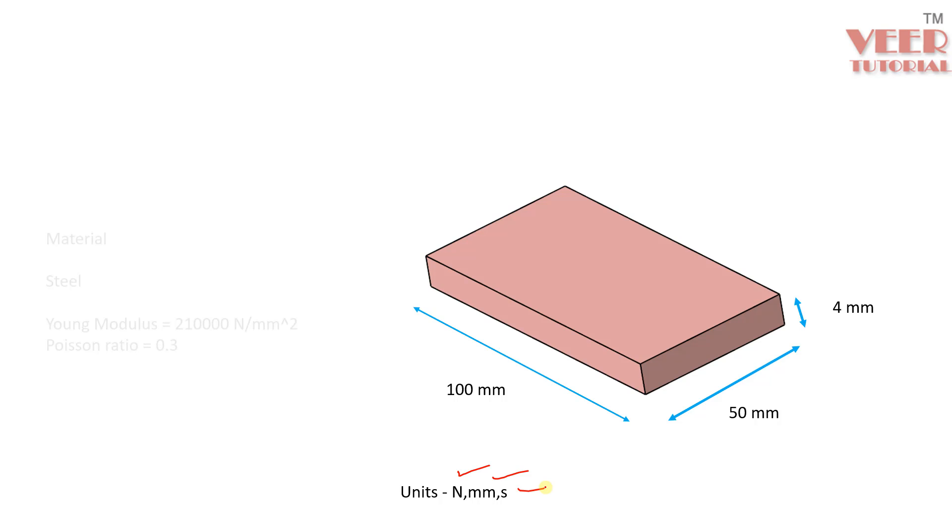Now let's consider the dimension of this part. For this plate, we have this length value that is 100, width is 50 and the thickness is 4 mm. This is the unit system we are going to follow: Newton mm second. For mass, it is tons. And here, we are going to take the simple type of material that is steel.